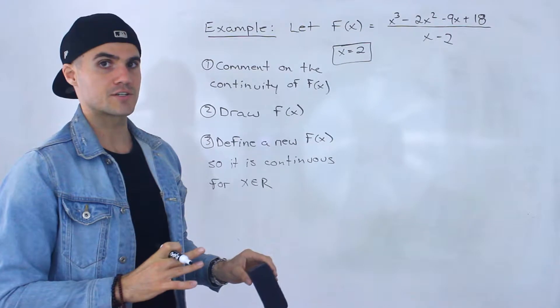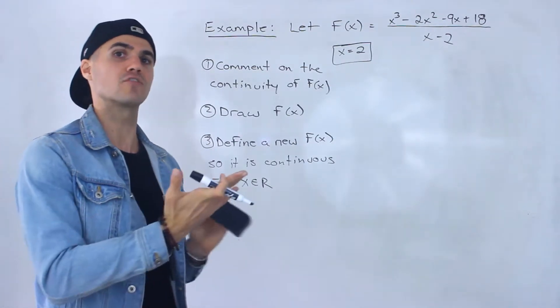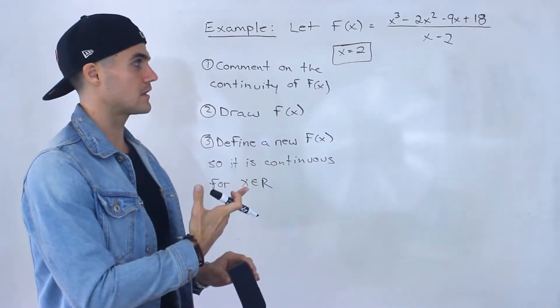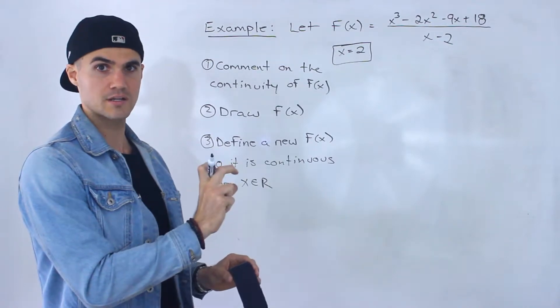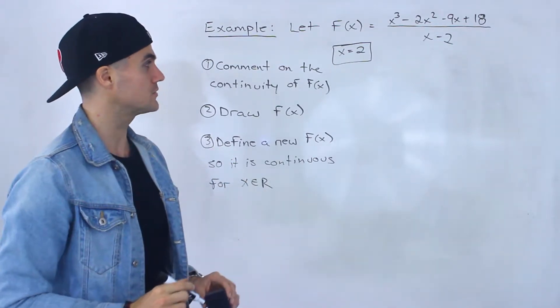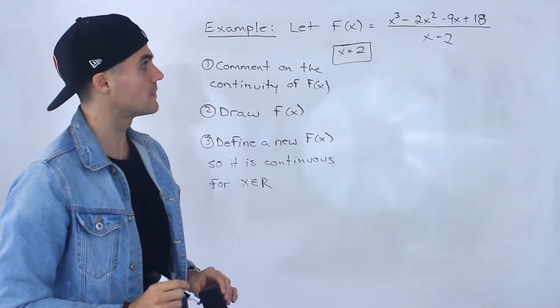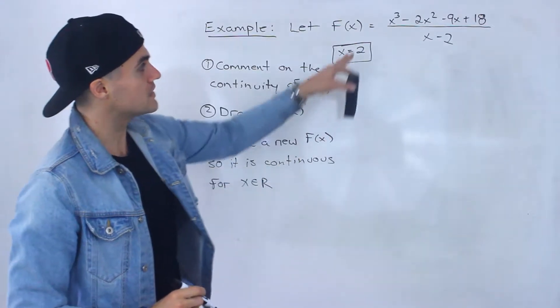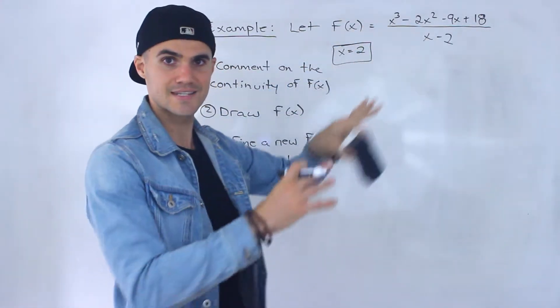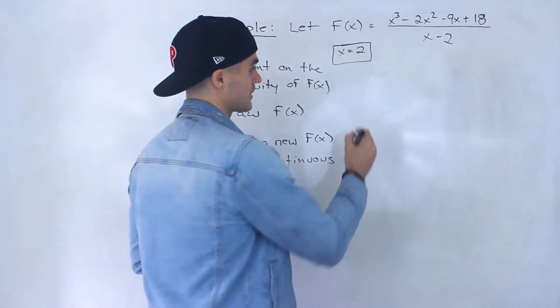Question is, what type of discontinuity is this going to be? Is it going to be a vertical asymptote? Is it going to be a hole, a point discontinuity or a removable discontinuity? So we've got to do a little bit more work. And the way we could figure that out is we can actually try to factor the numerator and see if any factors potentially cancel out.